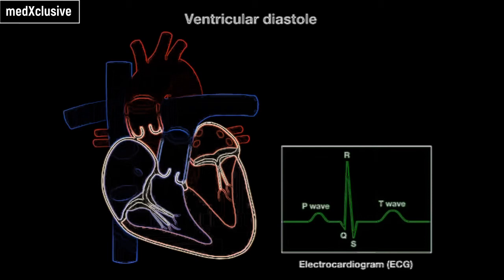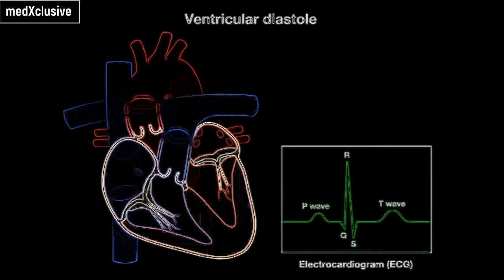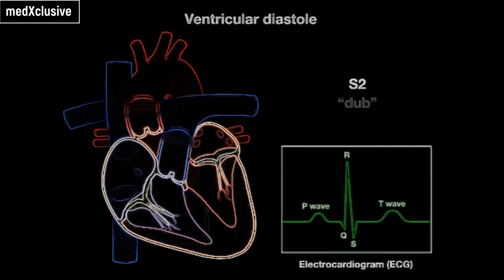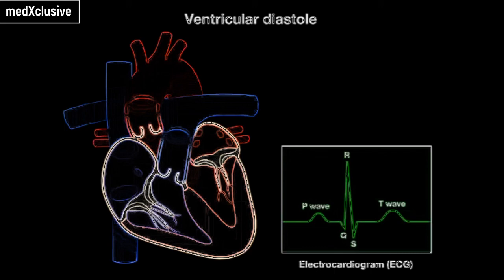In ventricular diastole, or relaxation, the ventricles repolarize. The T wave on an ECG represents ventricular repolarization. Ventricular relaxation results in decreasing ventricular pressure. During ventricular diastole, blood in the pulmonary trunk and aorta flows back toward the semilunar valves, causing them to close. The heart sound associated with closure of the aortic and pulmonary valves is known as S2, often described as DUB. After the aortic and pulmonary valves close, pressure in the ventricles continues to decrease. When intraventricular pressure falls below the pressure in the atria, the AV valves open, and the cardiac cycle begins again.